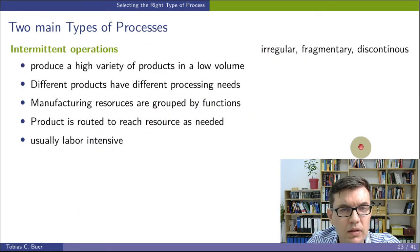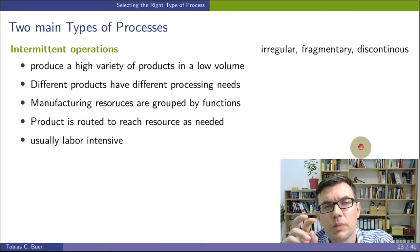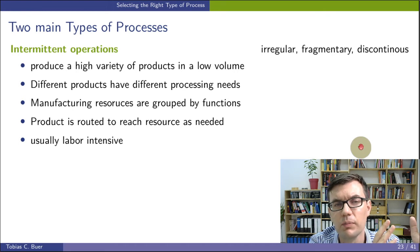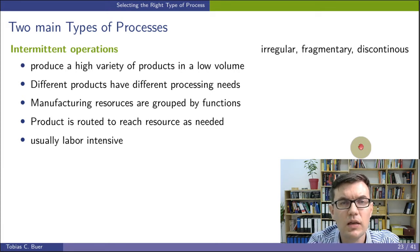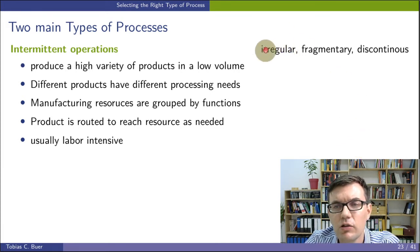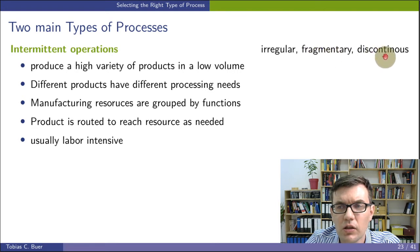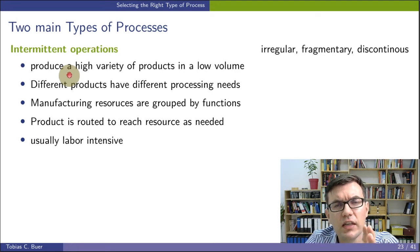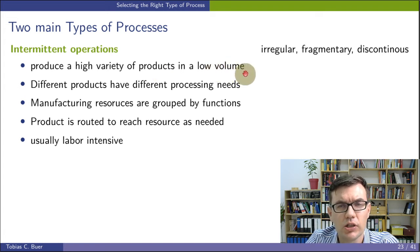If we want to sum up this discussion, we need to distinguish between two main types of production processes on different ends of a continuum. The first one is intermittent operations. Intermittent means irregular, fragmentary, or discontinuous. We typically use these types of operations when we want to produce very individual products and we have a low production quantity, a low production volume.